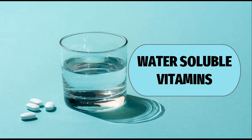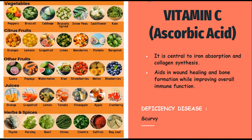We will discuss about water-soluble vitamins first. First we have vitamin C, also called ascorbic acid. It is central to iron absorption and collagen synthesis. It helps in absorption of iron, aids in wound healing, bone formation in the body, and also improves the immunity function in our body.